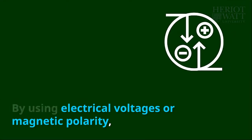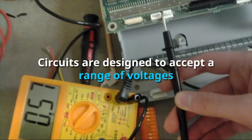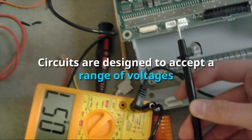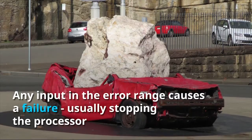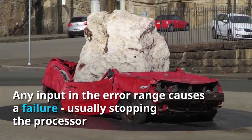By using electrical voltages or magnetic polarity, it allowed these circuits to represent data. Circuits are designed to accept a range of voltages. Any input in the error range causes a failure, usually stopping the processor.